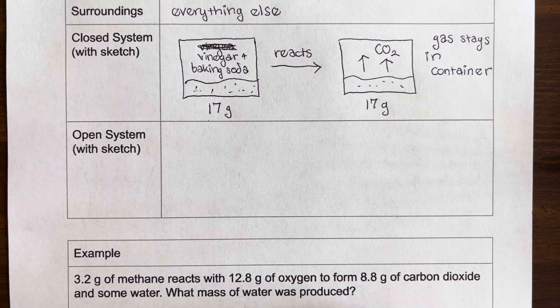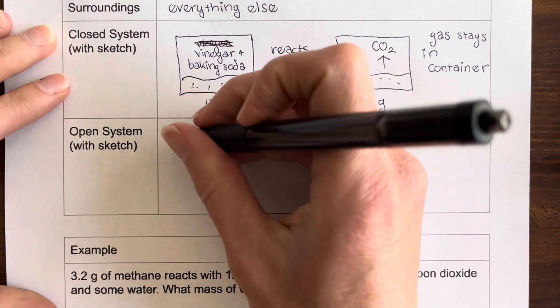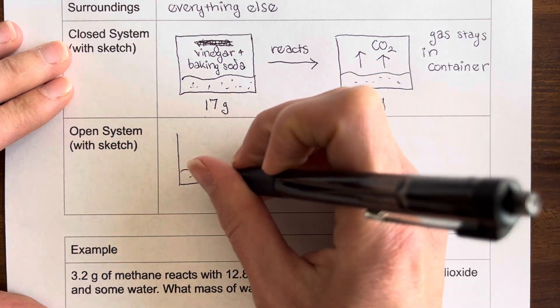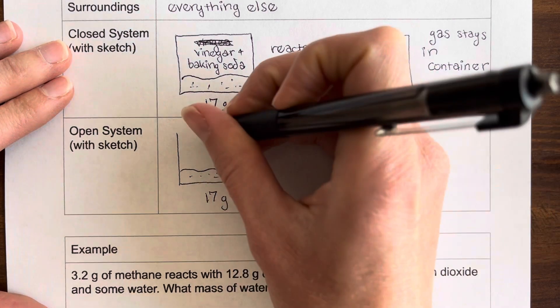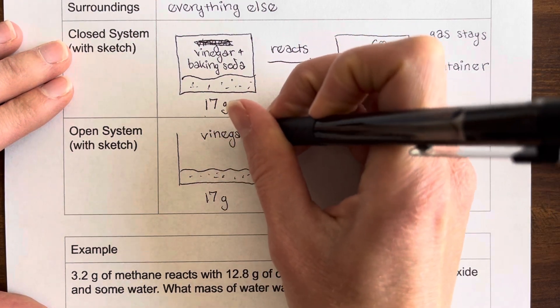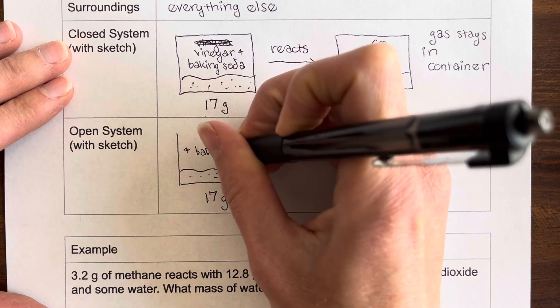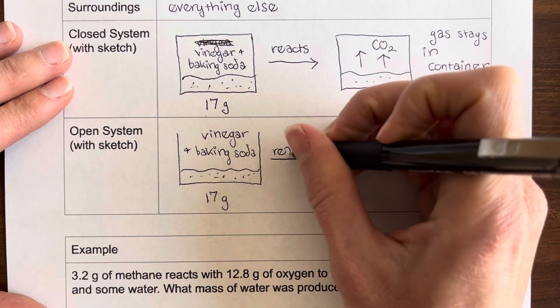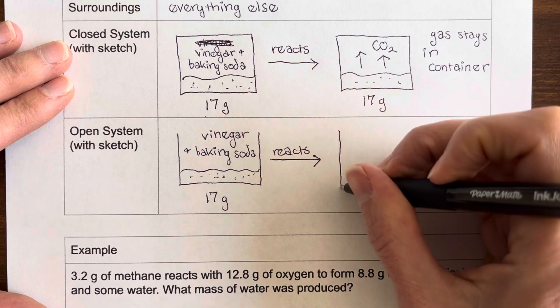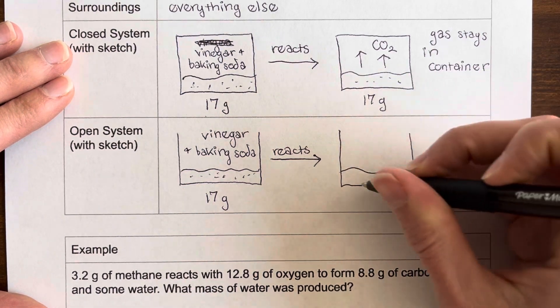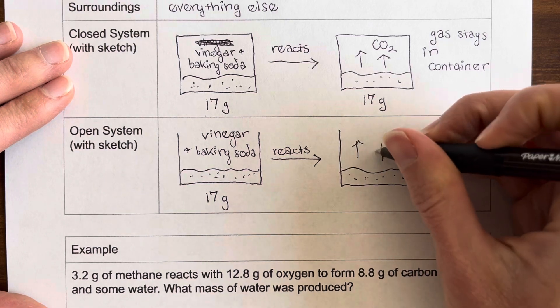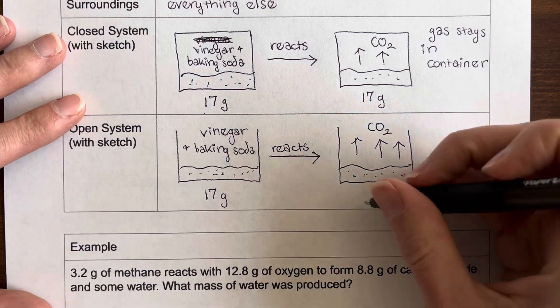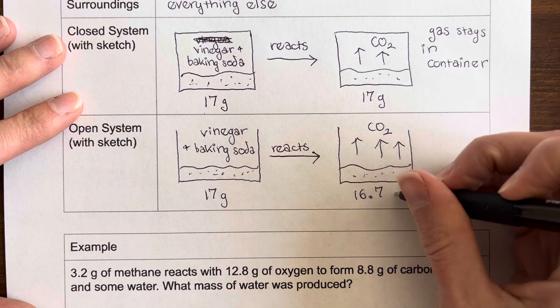Now let's do the same thing, but with an open system. So we're going to do the same vinegar and baking soda reaction. Let's say here's our vinegar, here's our baking soda, still 17 grams. We'll label this. And then let's say we go through our reaction and carbon dioxide is produced.